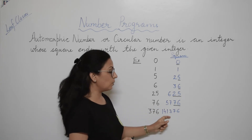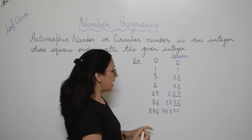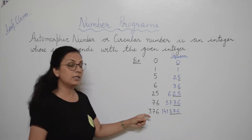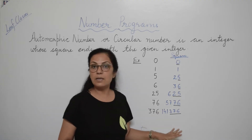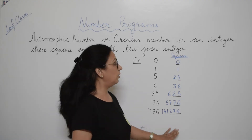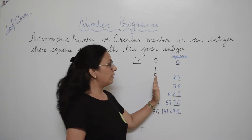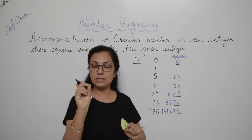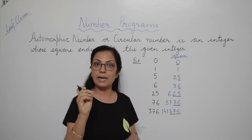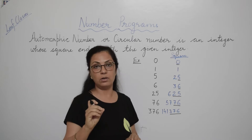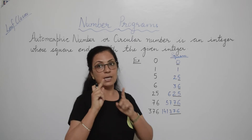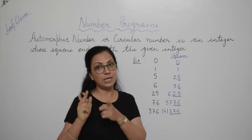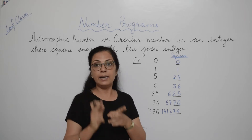For 376, its square is 141376 and the last 3 digits are 376 — that number itself. So the definition should be clear: if it is a single digit number, check whether the last digit in the square is that number. If it is a 2-digit number, check the last 2 digits. If it is a 3-digit number, check the last 3 digits.